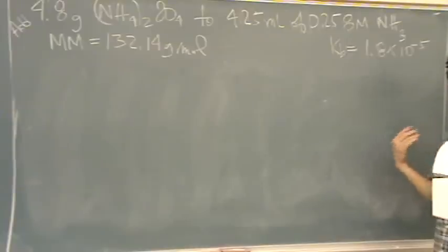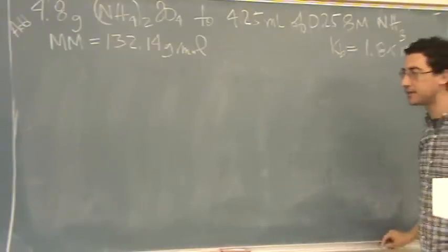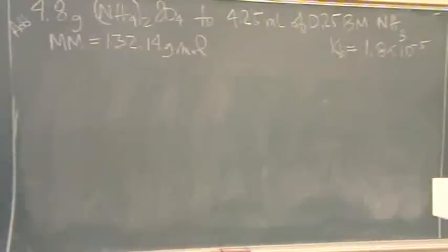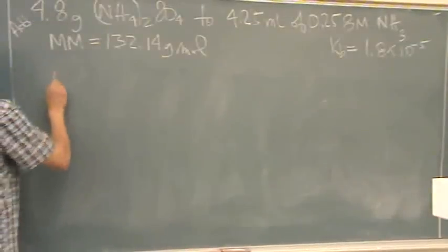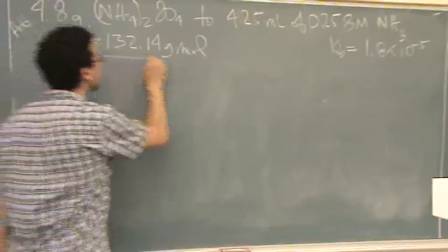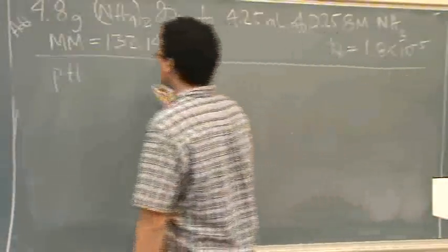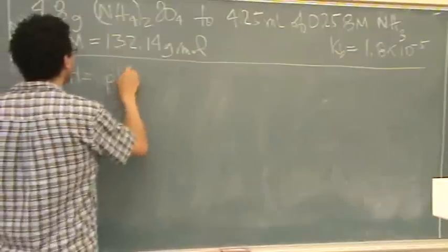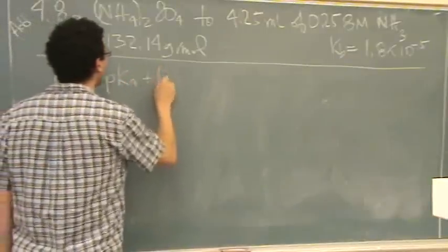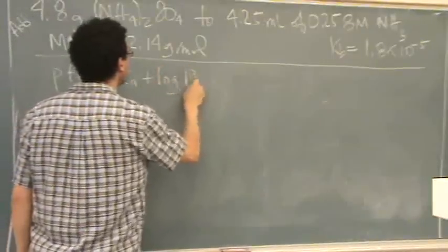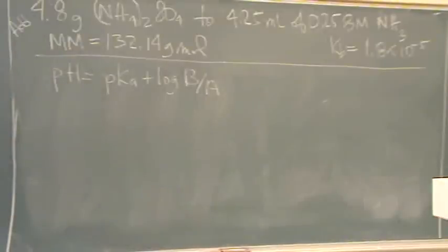We're basically telling you, begging you to use Henderson-Hasselbalch here. So, pH equals pKa plus the log of the base over the acid. So we just need to find all these components.